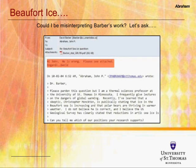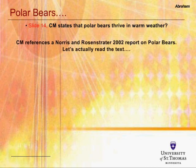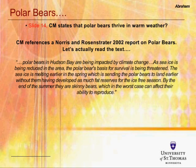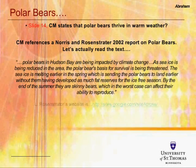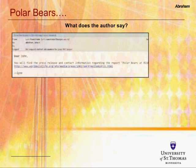On slide 14, Chris Monckton references a paper by Norris et al., 2002, and states that polar bears are thriving in warm weather but not doing well in cool weather. Let's investigate what the authors of that paper think. Reading the text from that 2002 report, it certainly does not indicate that polar bears are thriving in warm weather and doing worse in cold weather. You can also go to Lynn Rosenstratter's website — I've included the link.